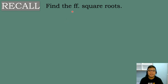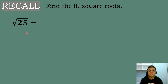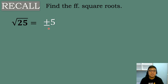Before we start with our main discussion, let's have a recall first and find the following square roots. Number 1: What is the square root of 25? To find the square root of 25, we will just think of a number that once multiplied by itself, the answer will be equal to 25. That number is equal to 5, because 5 times 5 is equal to 25. So the square root of 25 will be positive or negative 5 — meaning we have two possible answers: positive 5 and negative 5.